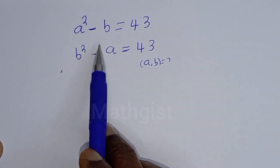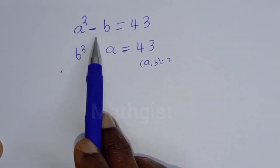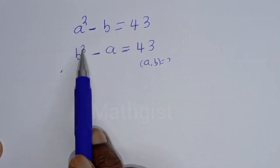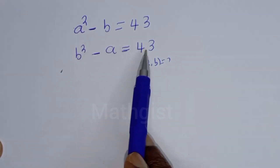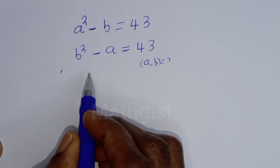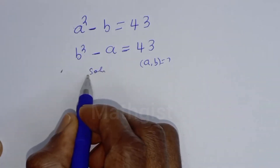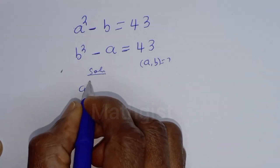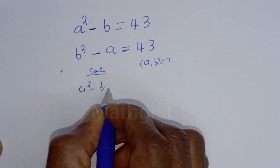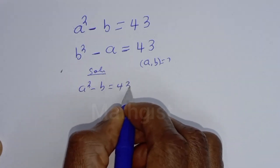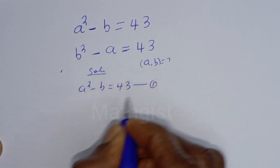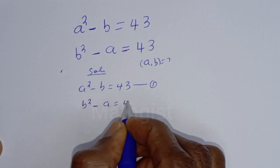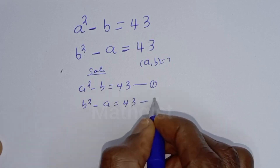How to solve for A and B from this given math Olympiad algebra problem. A squared minus B is equal to 43. B squared minus A is equal to 43. Let's call the first equation 1, and the second equation 2.